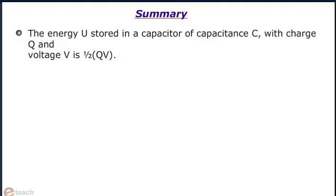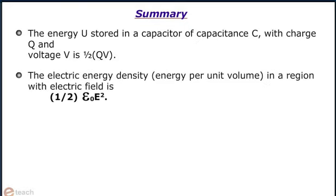The energy stored in a capacitor of capacitance C, with charge Q and voltage V, is half QV. The electric energy density, energy per unit volume, in a region with electric field is half epsilon naught E square, where E is the electric field.